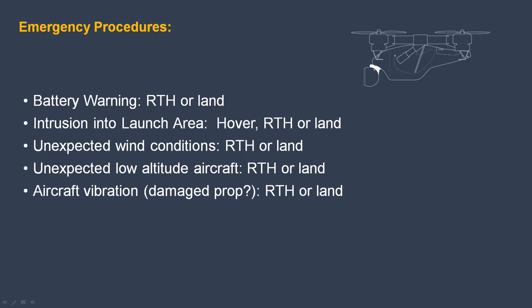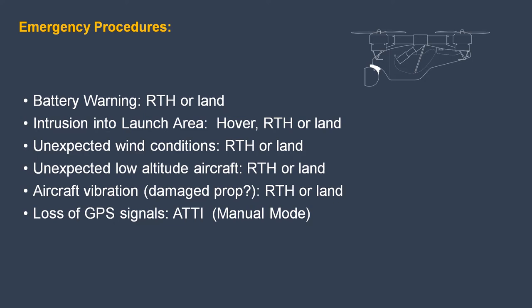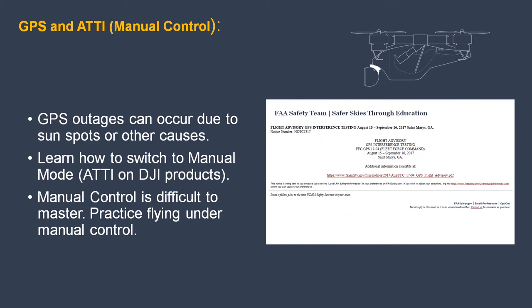Develop your emergency procedures before any emergency. Battery warning: return to home or land. Intrusion into the launch area: hover, return to home or land. Unexpected wind conditions: decide whether to return to home or land. Unexpected low altitude aircraft: return to home or land. Aircraft vibration, maybe from a damaged prop: return to home or land. Loss of GPS signals: switch to manual mode. On the DJI Phantom 2, for example, if less than six satellites are found for more than 20 seconds, the aircraft will descend automatically. GPS outages can occur due to sunspots or other causes such as military testing.